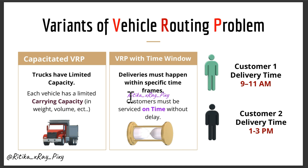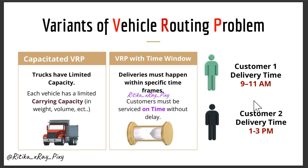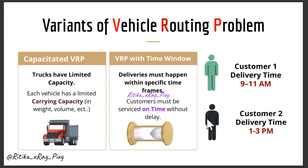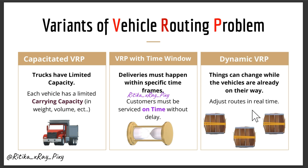The second variation is VRP with Time Windows. In this type, customers want delivery at a specific time, so deliveries must happen within specific time frames. We need to plan routes to ensure that packages arrive within those time periods. For example, one customer may want delivery between 9 to 11 AM and another between 1 to 3 PM, so routes must follow these schedules.